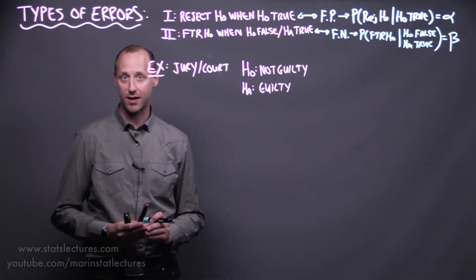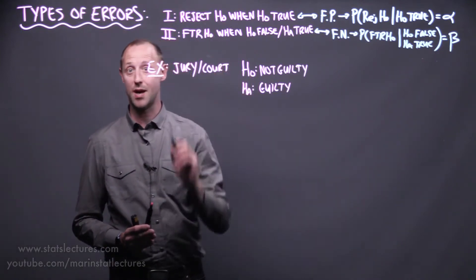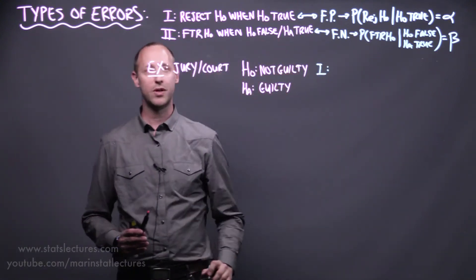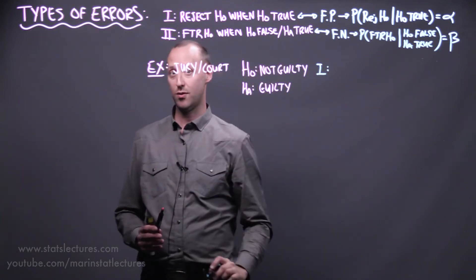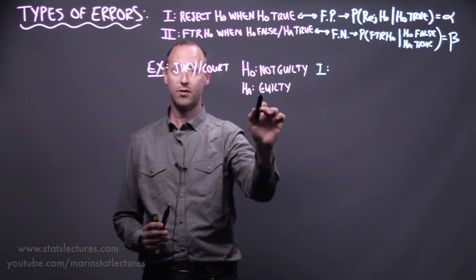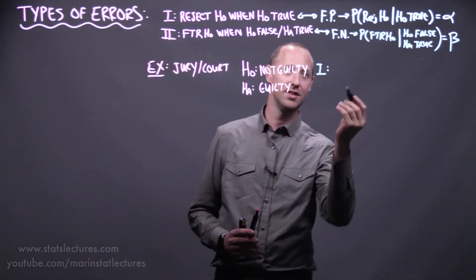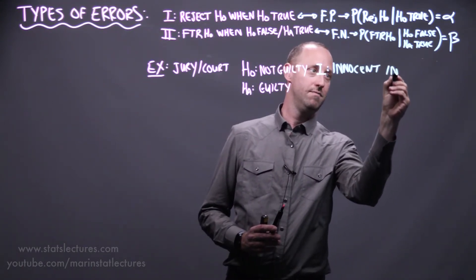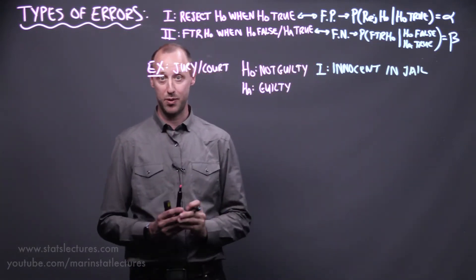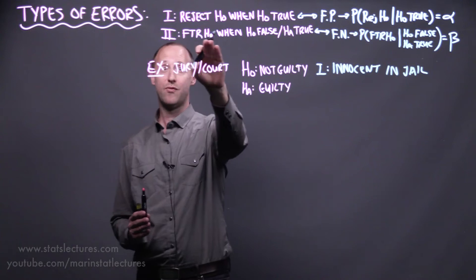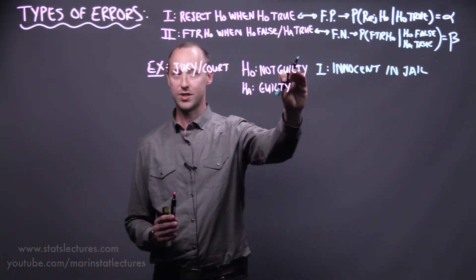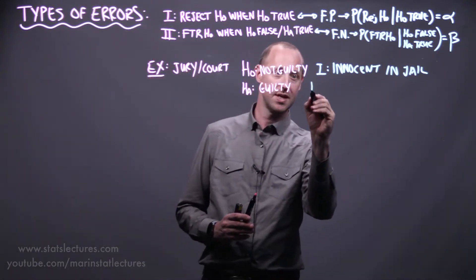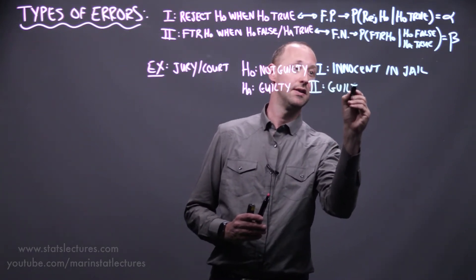In either of these cases, we may end up making an error. A Type 1 error is when we reject our null when in fact the null is true — we say they're guilty when in fact they're not guilty. So this kind of error results in an innocent person being sent to jail. A Type 2 error is where we fail to reject the null — we find them not guilty when in fact the alternative is true and they were guilty. So this type of error, in context, means a guilty person is set free.